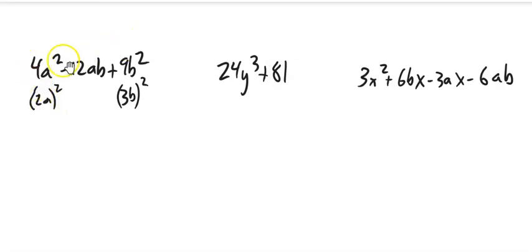And this middle term is 2 times 2a times 3b. Yeah, 4 times 12ab, yeah. So this means this is a perfect square, so this factors to (2a - 3b) squared. And again, if you don't see that right off the bat, use AC.